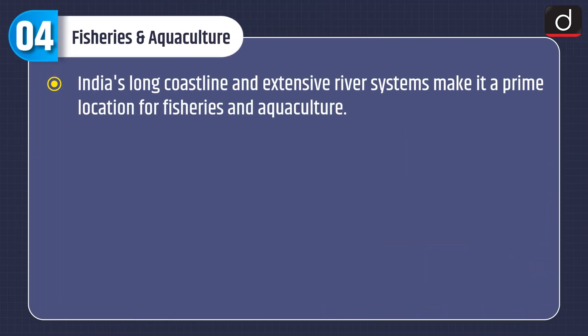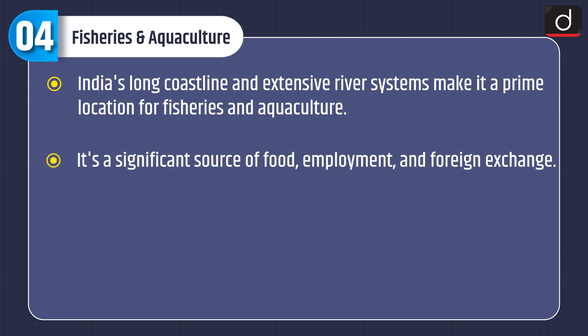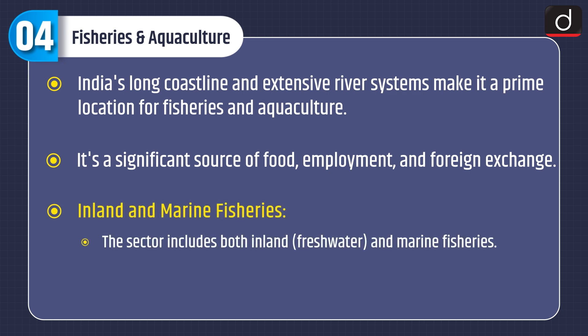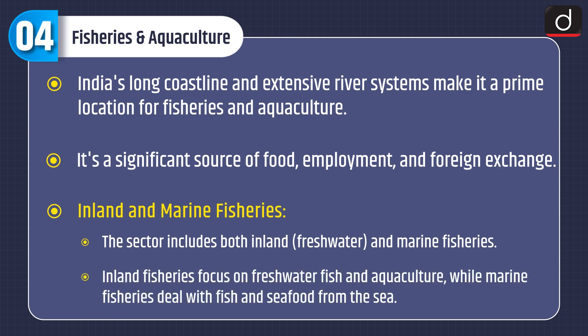India's long coastline and extensive river systems make it a prime location for fisheries and aquaculture, which are a significant source of food, employment, and foreign exchange. The sector includes both inland, i.e. freshwater, and marine fisheries. Inland fisheries focus on freshwater fish and aquaculture, while marine fisheries deal with fish and seafood from the sea.